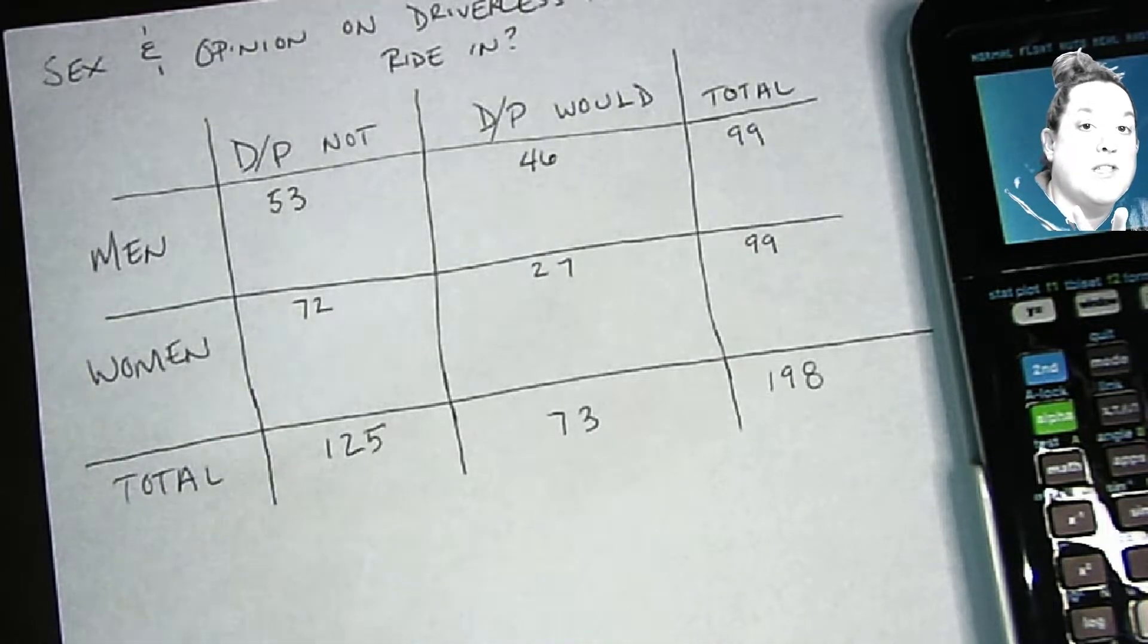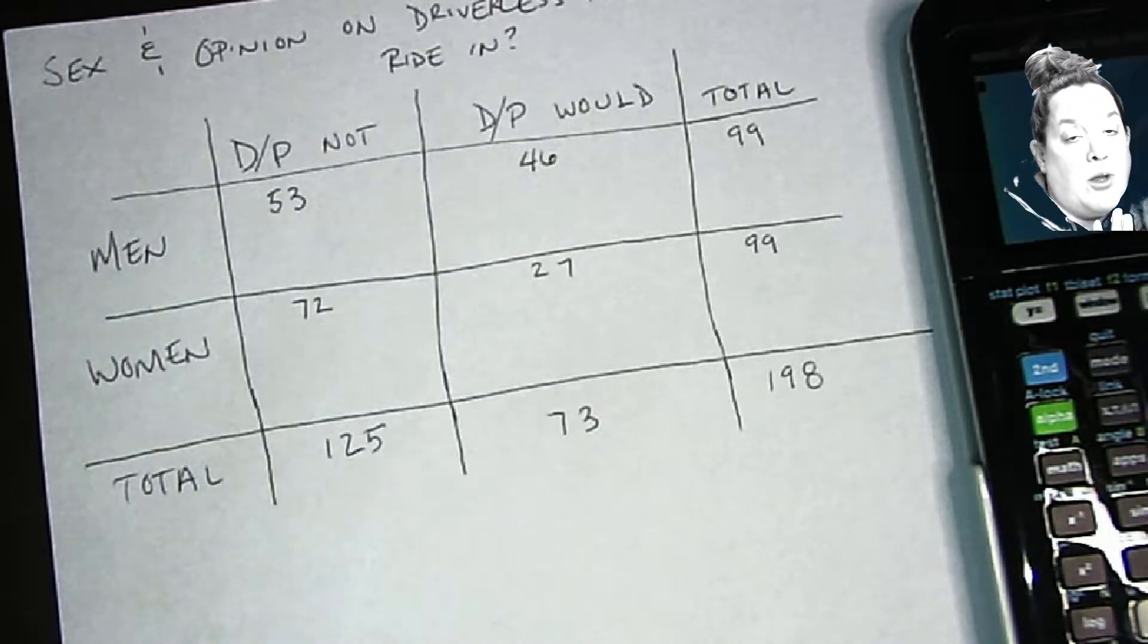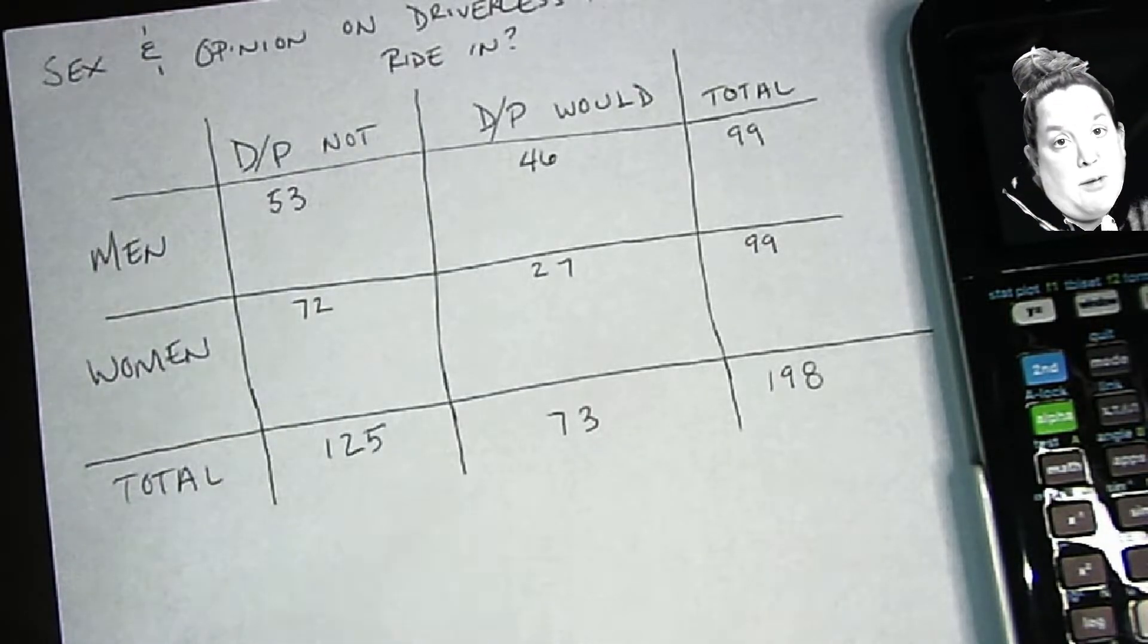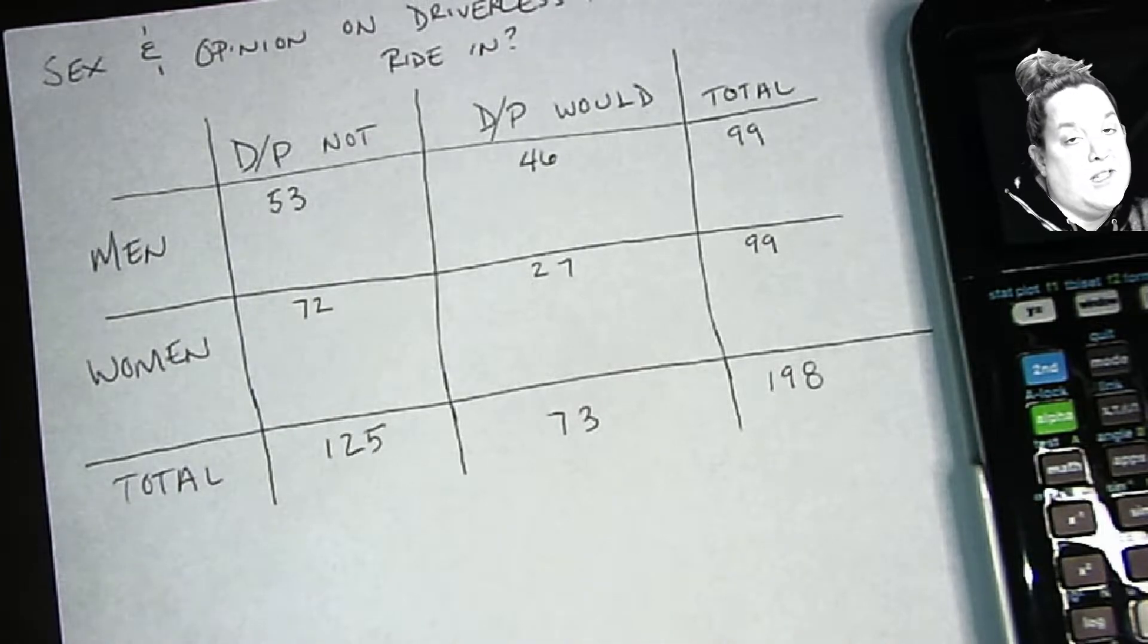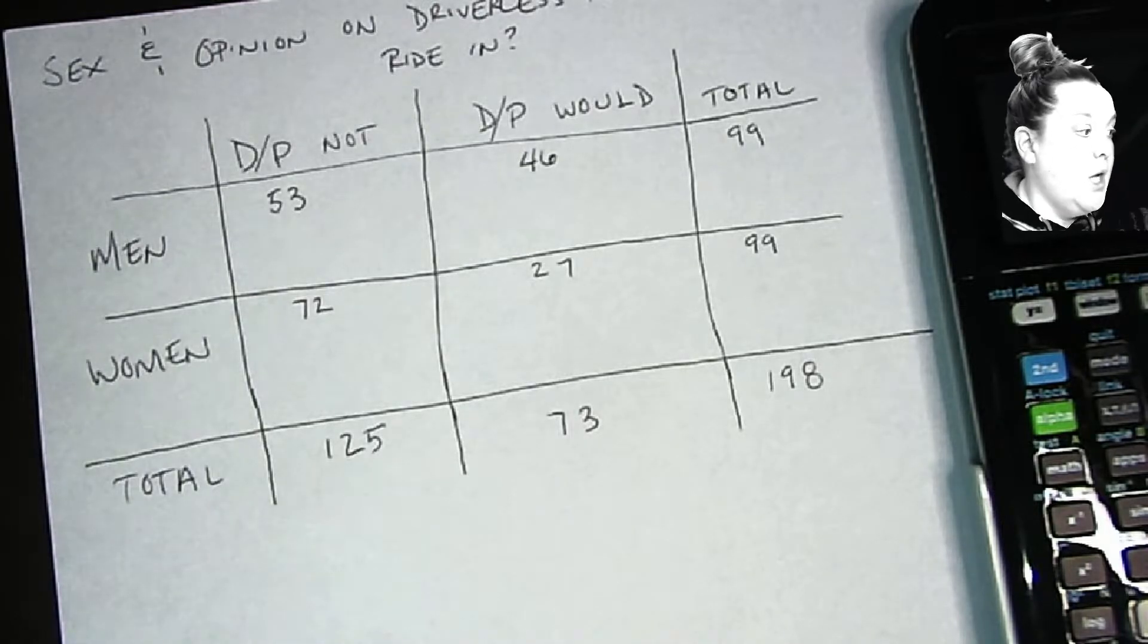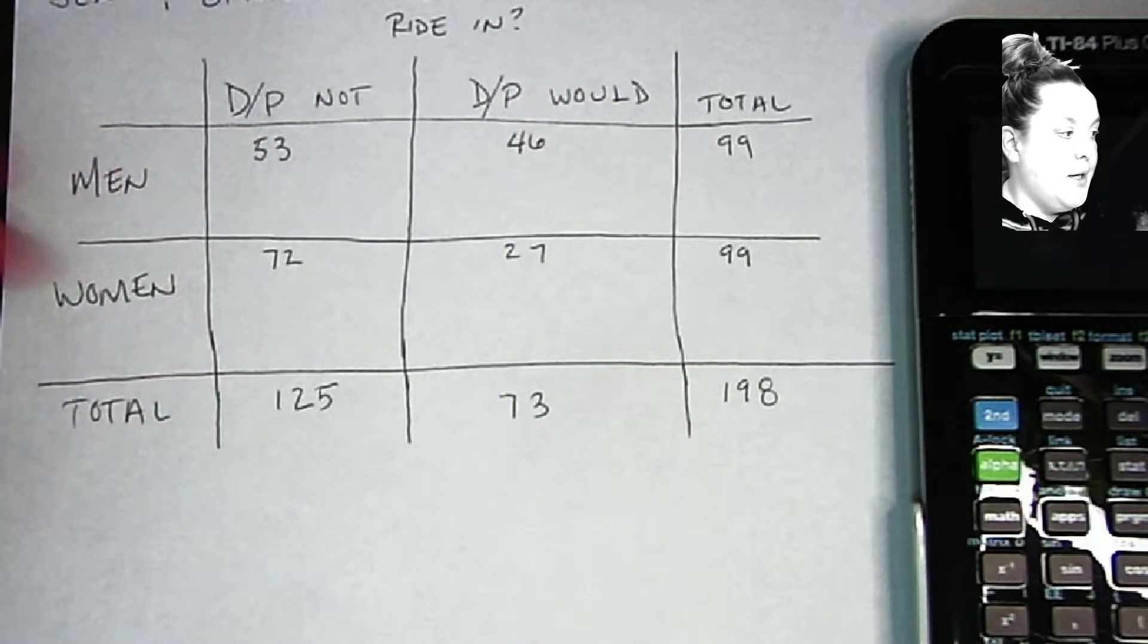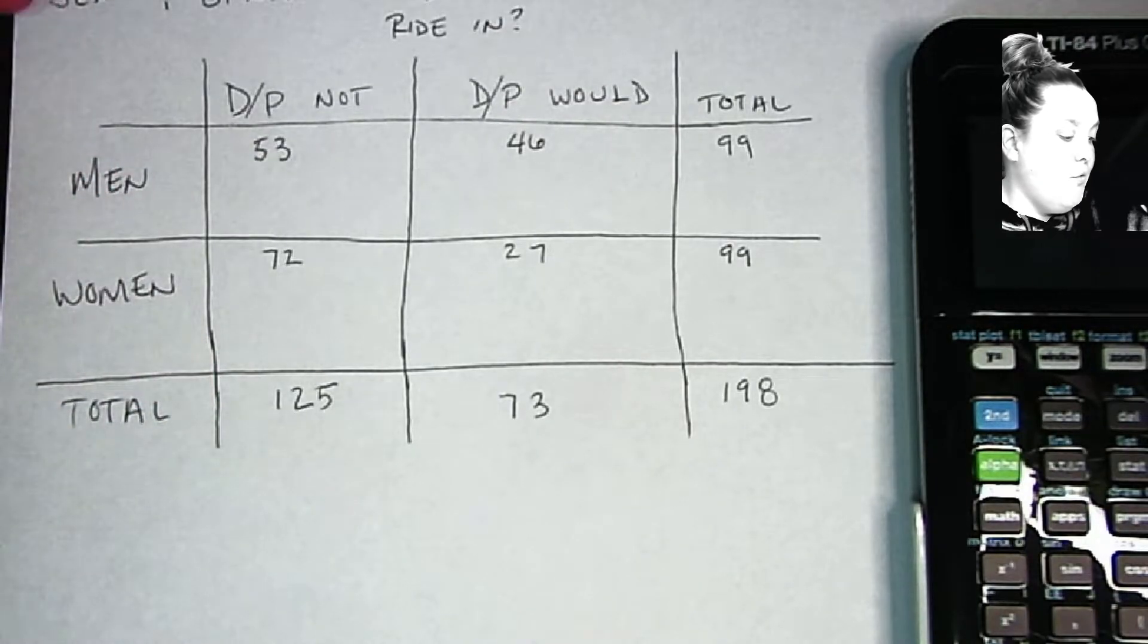That means there's two pieces of information collected on one individual. The other thing that's true about a contingency table or a two-way table is that the explanatory variable, so the variable doing the explaining, is going to be represented in the rows. The table that you see here is sex and opinion on driverless passenger vehicles.